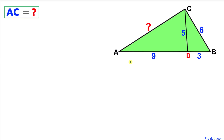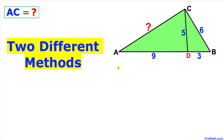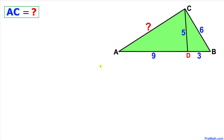Welcome to pre-math. In this video tutorial we have got triangle ABC and we are going to calculate the side length AC. In this triangle, line segment AD is 9, line segment DB is 3, BC is 6, and CD is 5. I will show you two different approaches to solve this problem.